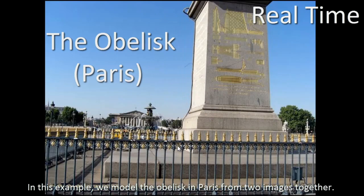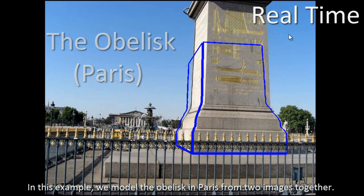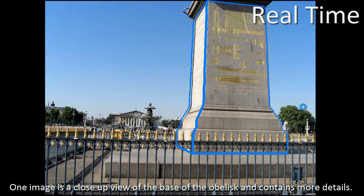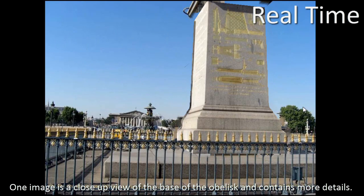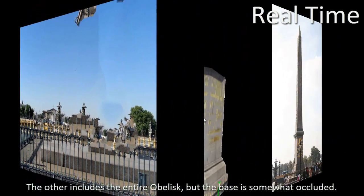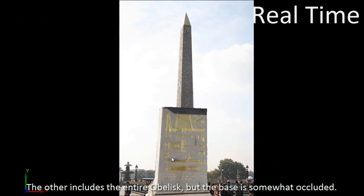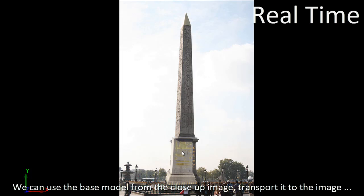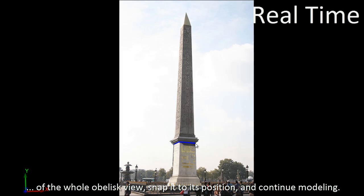In this example, we model the obelisk in Paris from two images together. One image is a close-up view of the base of the obelisk and contains more details. The other includes the entire obelisk, but the base is somewhat occluded. We can use the base model from the close-up image, transport it to the image of the whole obelisk view, snap it to its position, and continue modeling.